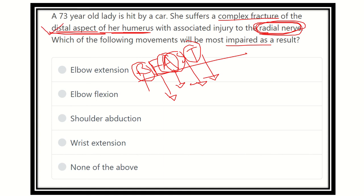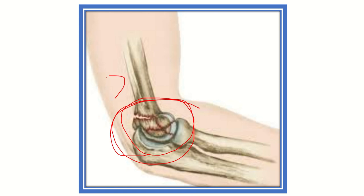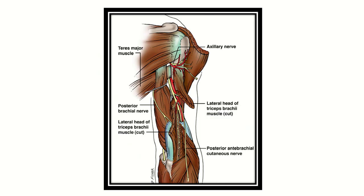If any muscle receives its nerve supply proximal to this injured point, that muscle will be spared. We can see this is the point where the fracture occurs — the distal aspect of the humerus. So if any muscle gets supplied from an area proximal to this point, that muscle will not be affected.